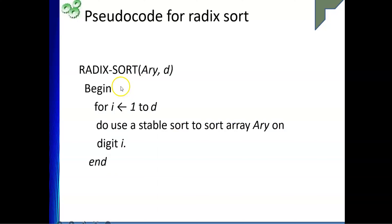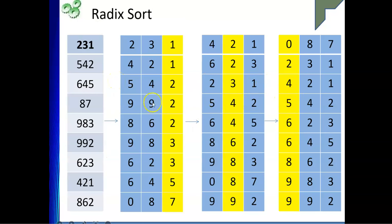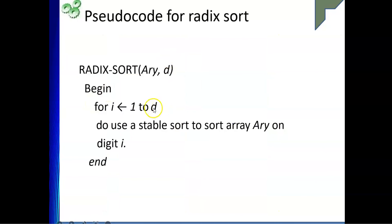Looking at the pseudo code: we take an array of elements and determine the number of digits. If there are five digits, we do five passes. In our example we went three passes because the maximum number of digits was three. We sort in each pass based on digit i, starting from the least significant digit to the most significant digit.